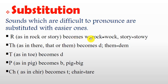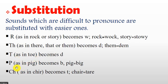Another strategy is substitution, where sounds that are difficult to pronounce are substituted with easier ones. For example, /r/ as in 'rock' becomes /w/; 'story' becomes 'tory'; /ð/ as in 'there', 'that', and 'them' becomes /d/; /t/ as in 'toe' becomes /d/; /p/ as in 'pick' becomes /b/; and /tʃ/ as in 'chair' becomes /t/, for example 'tear'.